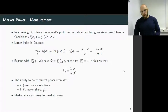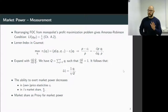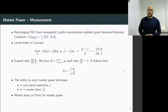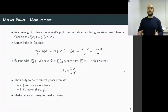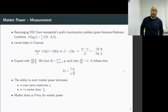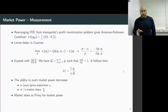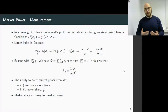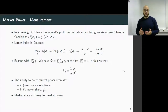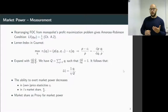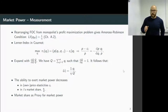Measuring market power is a difficult topic; we'll cover only the fundamentals here. The devil is in the detail in practical applications. The critical question is always which markets are relevant — something we'll address in detail when discussing mergers. From the first-order condition of a monopolist, we can derive the Amoroso-Robinson condition, which tells us the Lerner Index equals the inverse of the own-price elasticity.